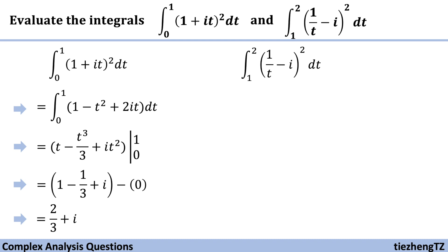Now let's take a look at the second question. We follow the same procedure — first we need to open the square. It becomes (1/t² - 1), because i² is minus one, and then times two times (1/t) times i.